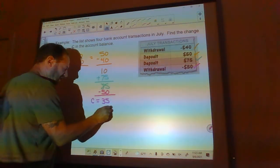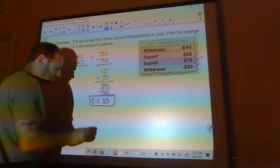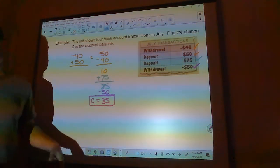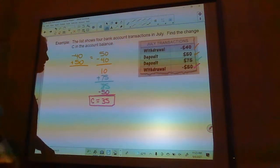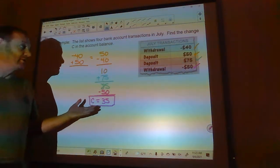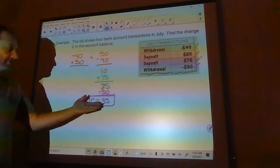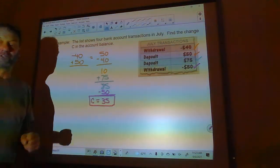Now this number right here is the change. That's how much the account changed. I don't know how much was in there to start with, I don't know how much was in there at the end, but I do know that it changed 35. So if I had zero dollars in there to start with, I now have 35. If I had a hundred dollars in there, now I have 135.